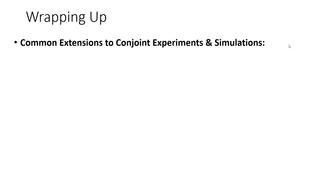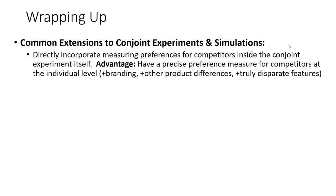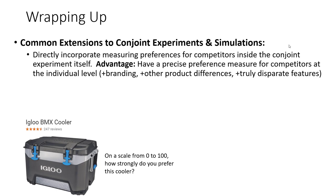There are a variety of common extensions to conjoint experiments and simulations. One of the most direct ones, not included in the InGenius module, is directly incorporating people's preference measurements of competing offerings — interspersing existing competitive offerings in the conjoint experiment and seeing how people evaluate them individually. This also allows us to recognize that branding matters: even if a competing product is technically identical in all attributes and levels, a branding effect can change people's preference. Measuring preference directly rather than inferring it from market share gives us a better understanding.